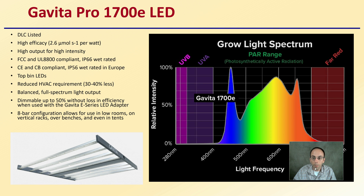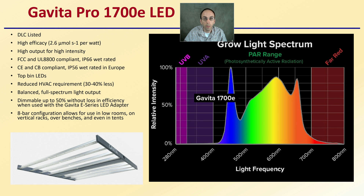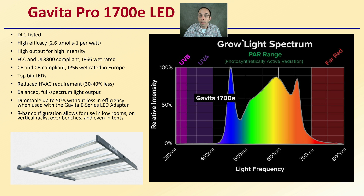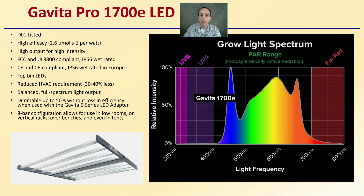Lastly, looking at one example — the Gavita Pro 1700E LED — to give an example of what these lights look like. They come in very different forms. This one gives you a nice chart to see what it's producing. They can reduce HVAC needs because they're not producing as much heat, and they have a nice even design with a spread-out light pattern. A lot of advantages. I'll do another video comparing specific brands of LED lights here on Tobacco University — you're welcome to search the channel for that. See you next time.